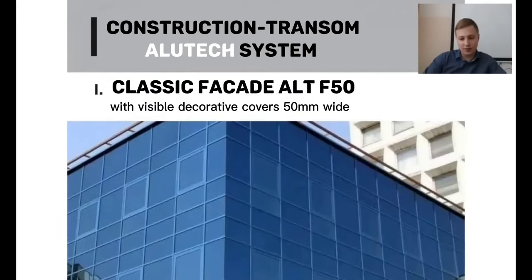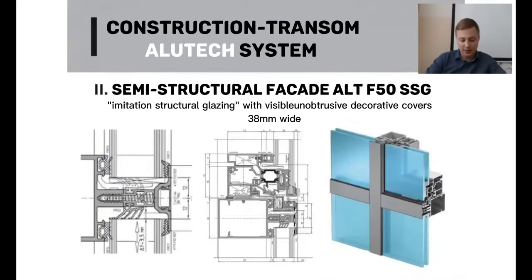This is what the classic facade looks like in reality — a rack and rafter mechanism where each element has a uniform visible thickness of 50 millimeters throughout. There are three types: regular facade, semi-structural facade, and structural facade.